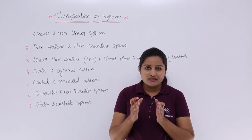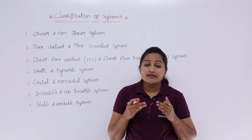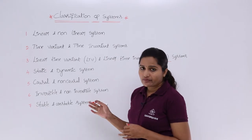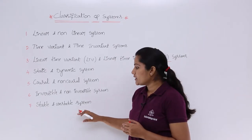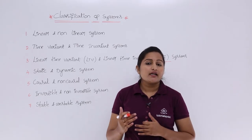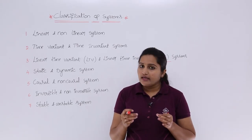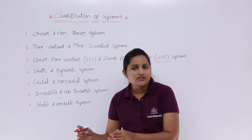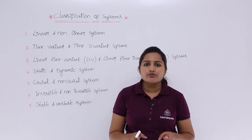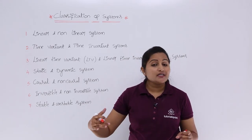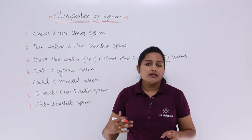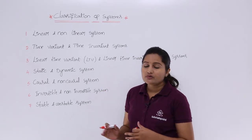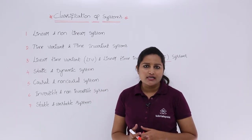For an invertible system, if there exists an inverse system that can invert the response back to its actual input, then that is called an invertible system; otherwise it is called a non-invertible system. For a stable system, when a bounded input produces a bounded output, that is said to be a stable system. For a bounded input producing an unbounded output, that is called an unstable system. Each classification will be discussed one by one from next class onwards.